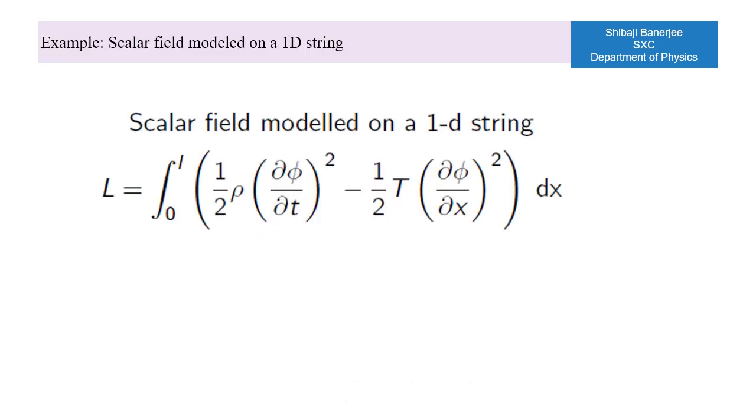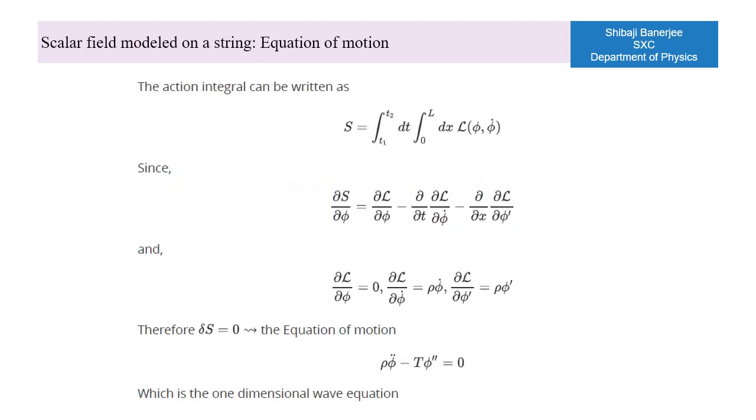Let us have a look at this Lagrangian which is written as an integral over a Lagrangian density, the density appropriate for describing waves on a stretched string fixed at both ends. Φ describes the transverse displacements, ρ is the linear mass density and T is the tension in the string. The action integral S is the integral L dt.